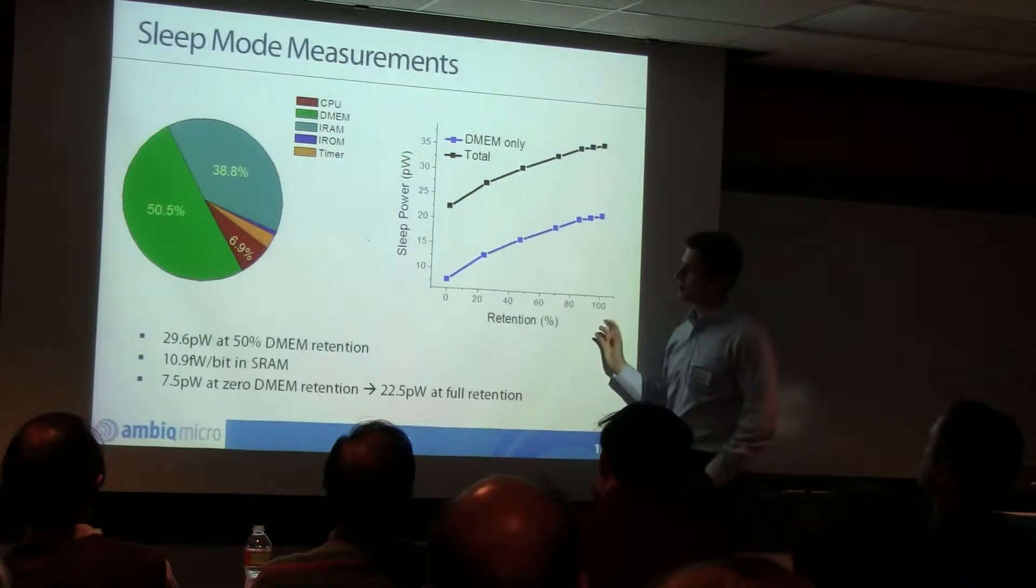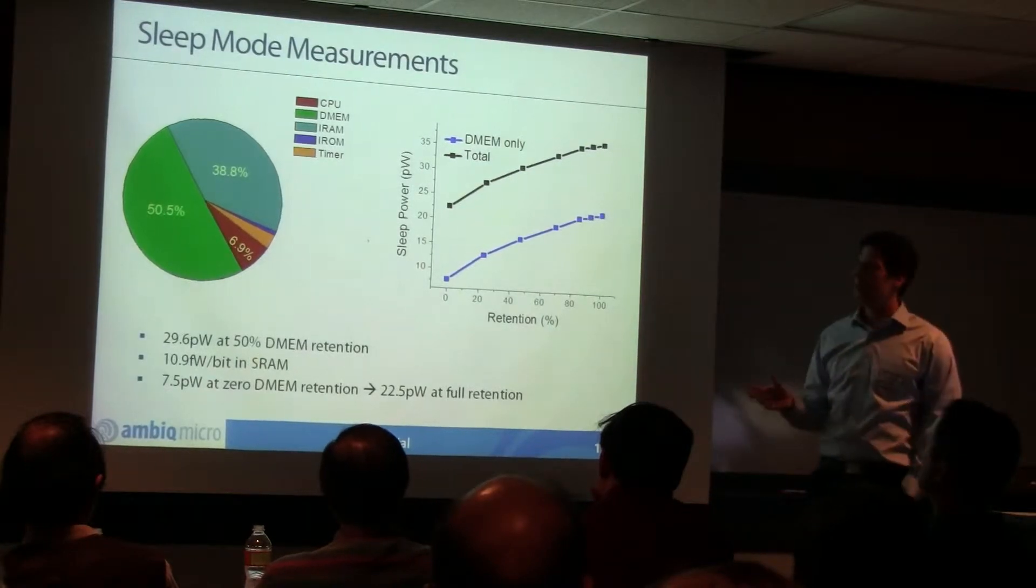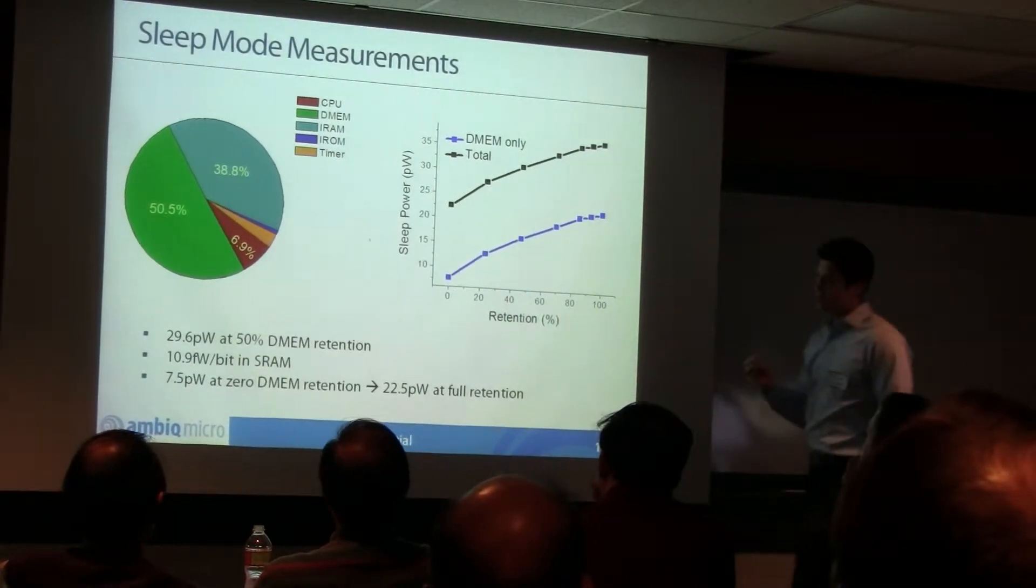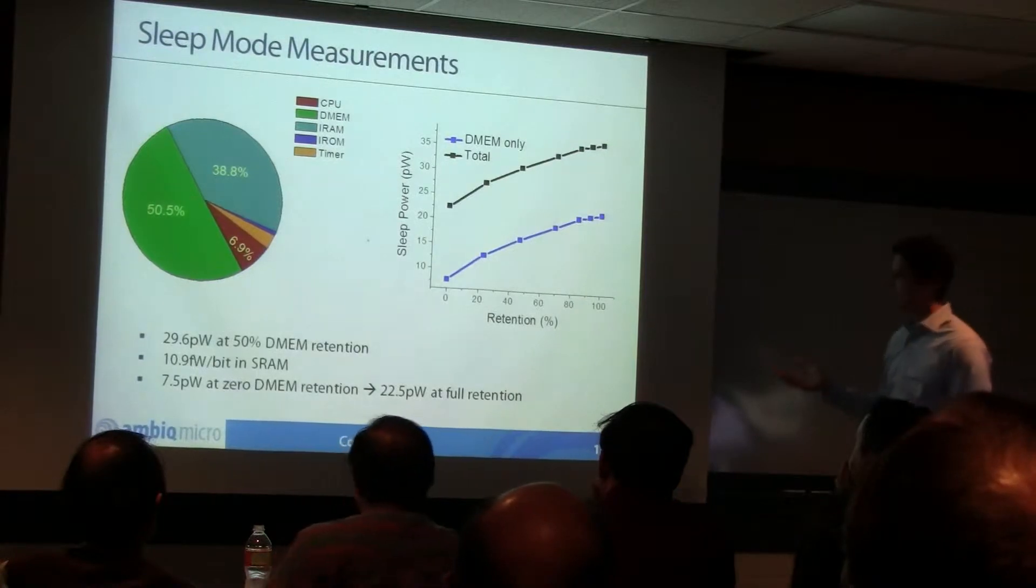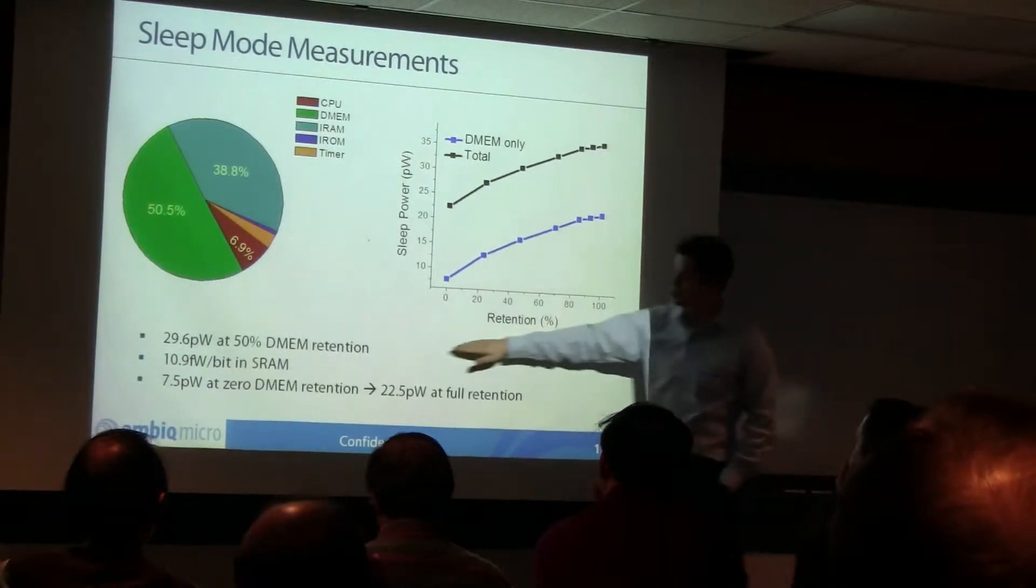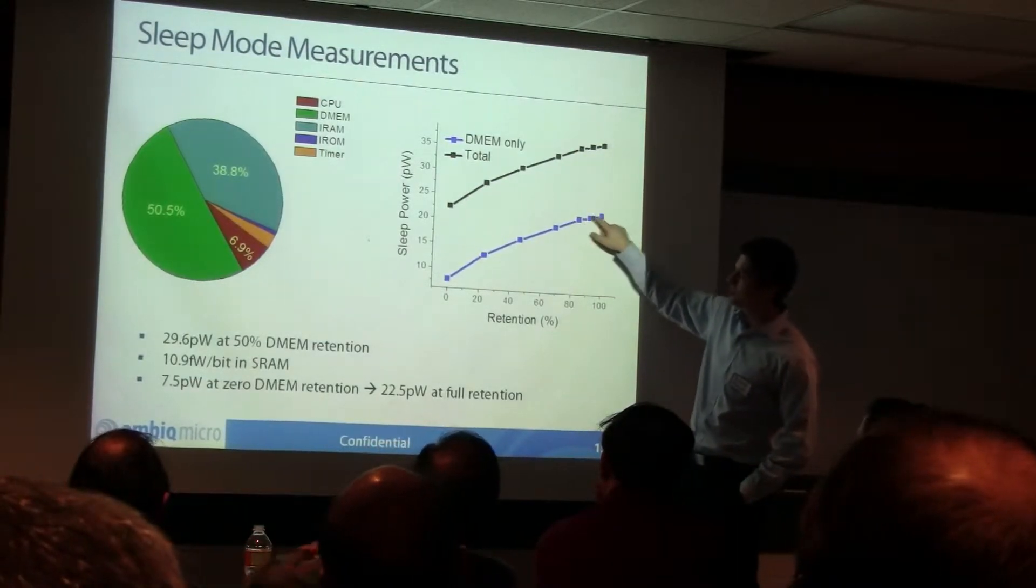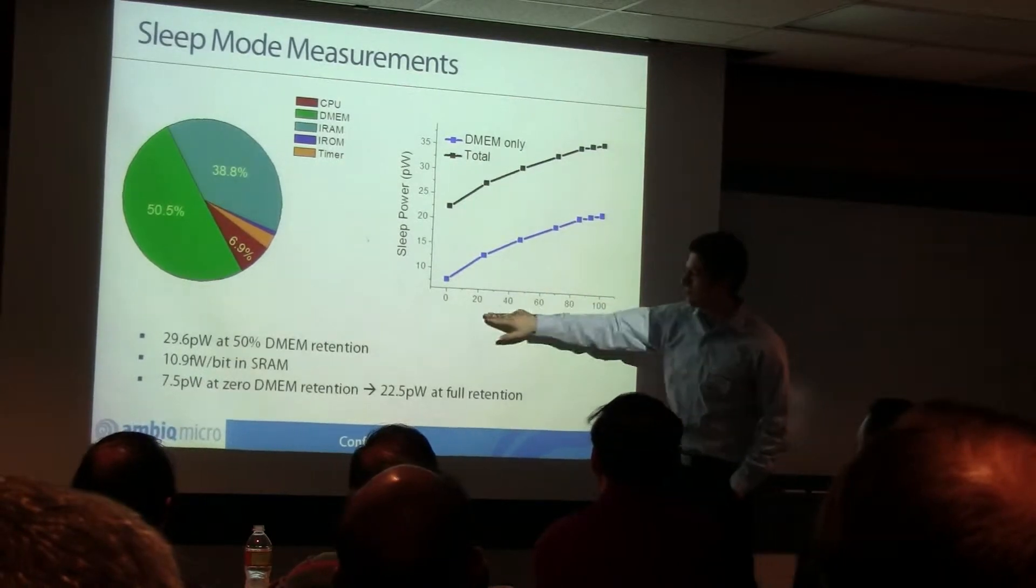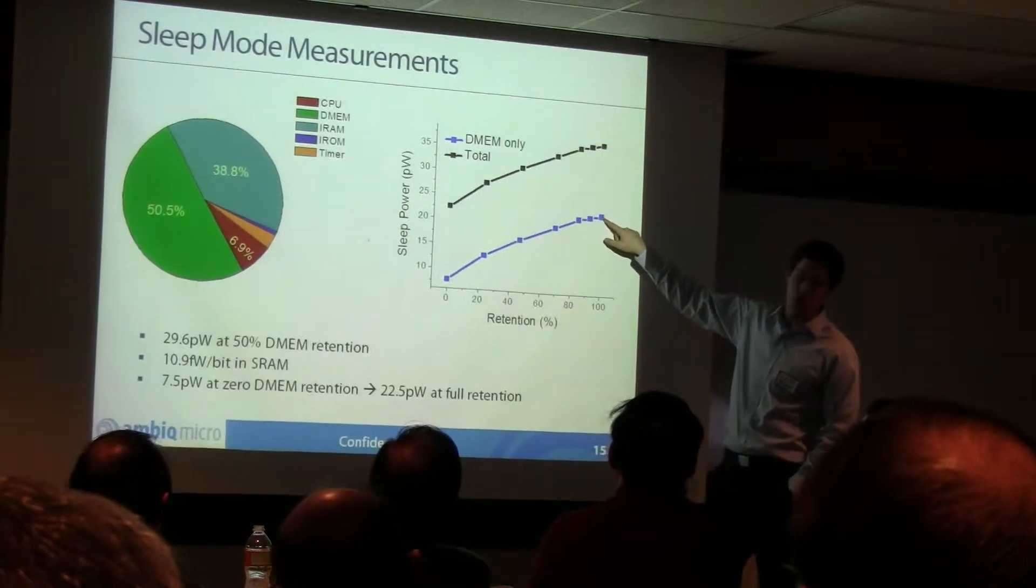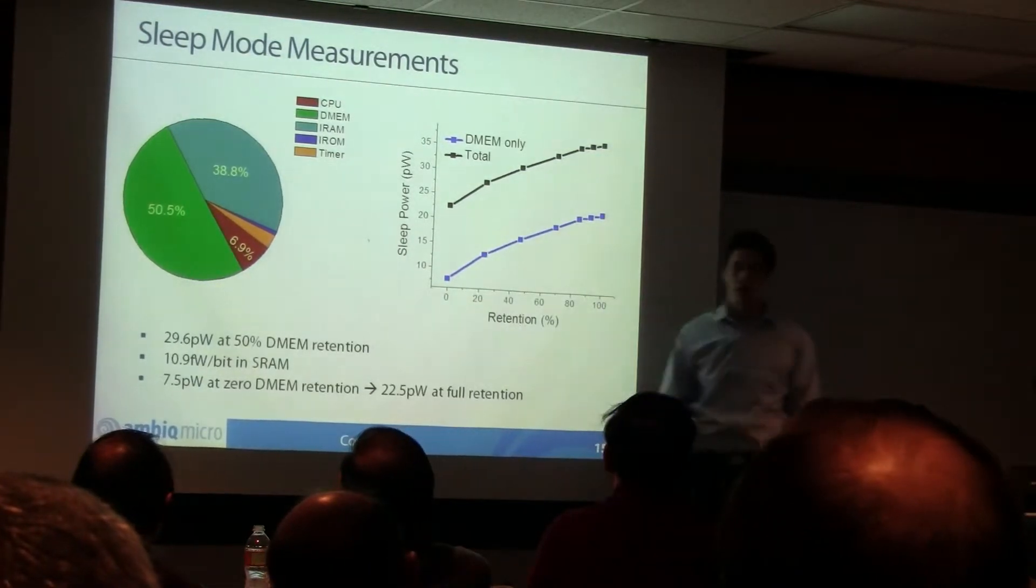The other thing we looked at was sleep mode. This was really the core of it. The key number here is that when I've got 50% of memory retained, so it's a very small, I think maybe 2 kilobit memory, very, very small, we're at about 30 picowatts. This is about 10,000 times lower than anything you'll see out there today. Now admittedly, it's a simplified device. I would never stack this up head-to-head against a commercial microcontroller, but it just shows what's possible when you start applying some of these techniques. One of the key things I mentioned earlier was the memory. You can actually see the current consumption of the memory as a function of the amount that's retained and the number of bytes essentially retained.